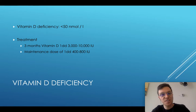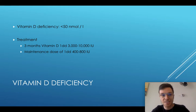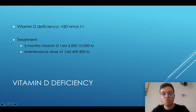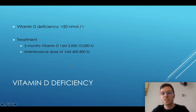Check if there is a vitamin D deficiency. We speak of a vitamin D deficiency when there is less than 50 nanomol/L of vitamin D. Treatment is 3 months of vitamin D once a day, 3000 to 10,000 units, and after those 3 months you take a maintenance dose of 400 to 800 units once a day.